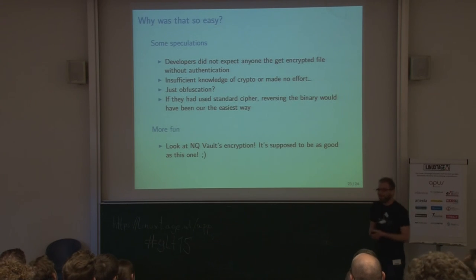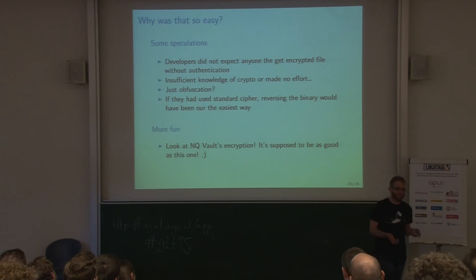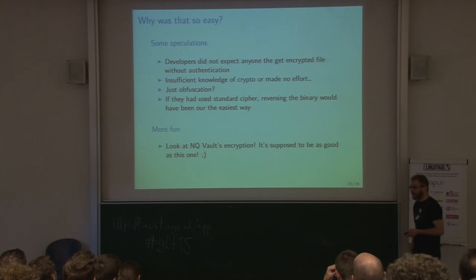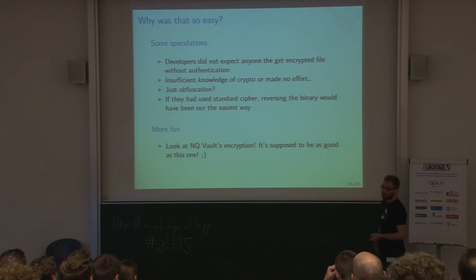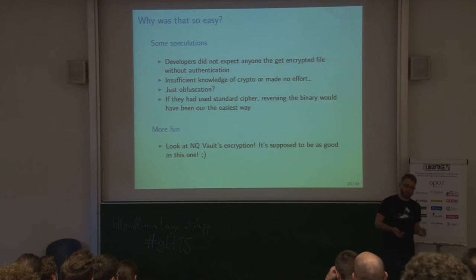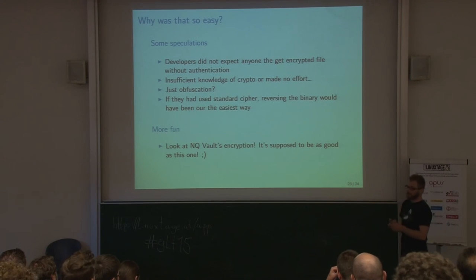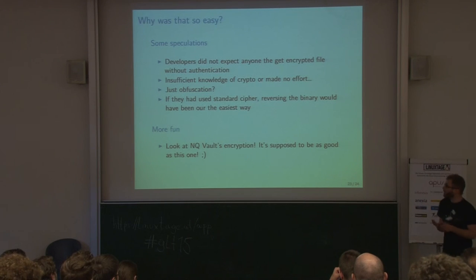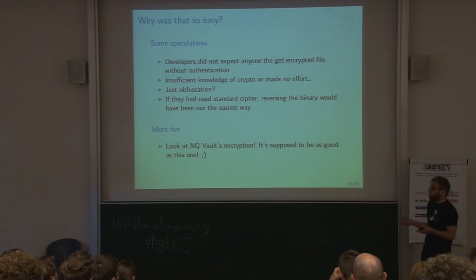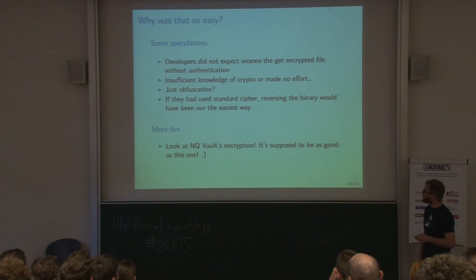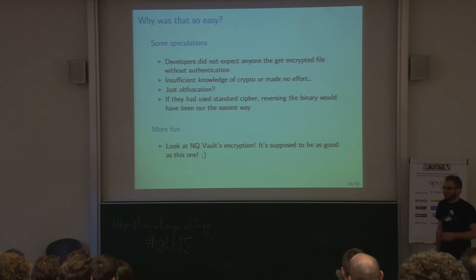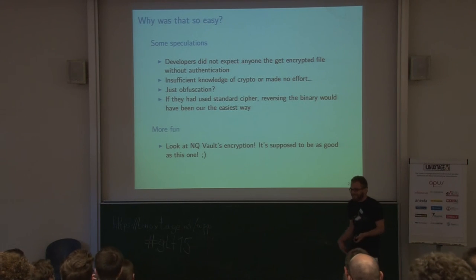Developers might not have known much about cryptography, or they didn't care. Or they thought nobody would be able to retrieve the file because it should be password-protected — but it wasn't. They basically had two problems: first, we were able to retrieve an encrypted file without authenticating to the access point; and second, they chose a very weak algorithm. Maybe they just wanted to obfuscate it — it's not real encryption, it's just obfuscation.